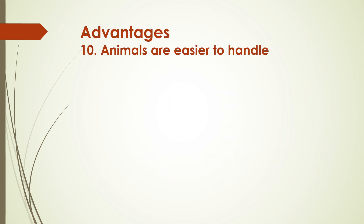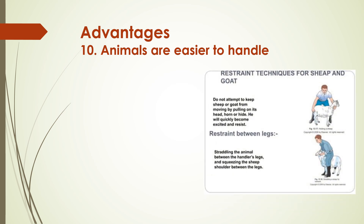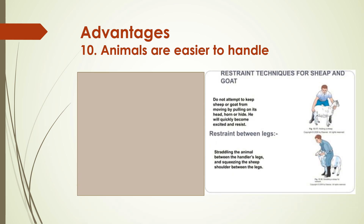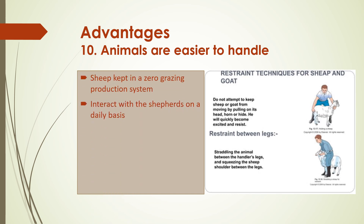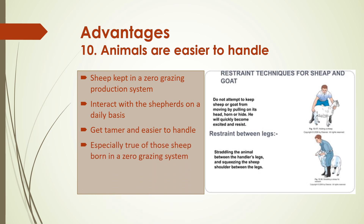Finally, the tenth advantage is that the animals are easier to handle. Because the sheep are kept in confinement and interact with the shepherd on a daily basis, they get tamer and easier to handle. This is especially true of those sheep born into a zero grazing system.